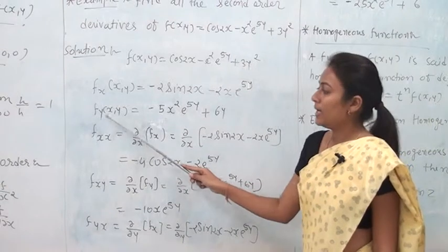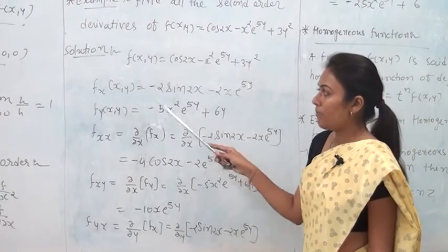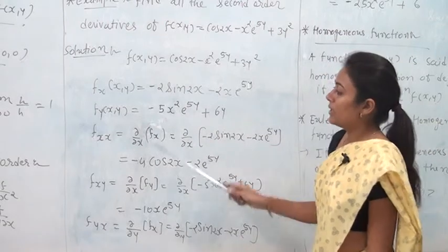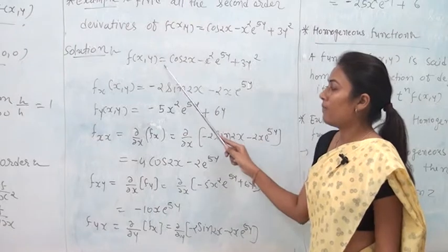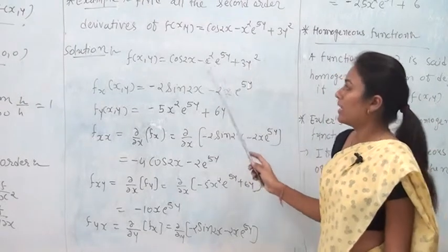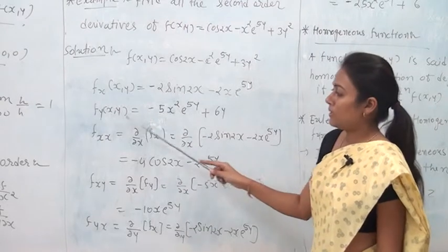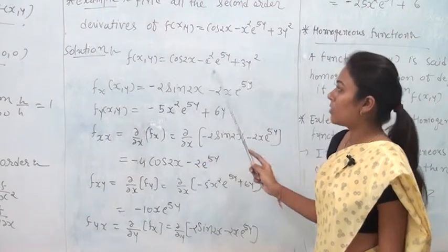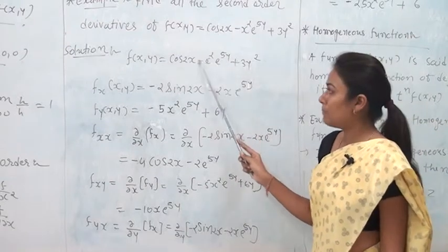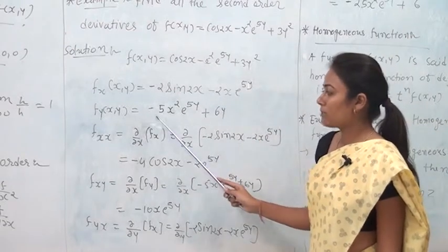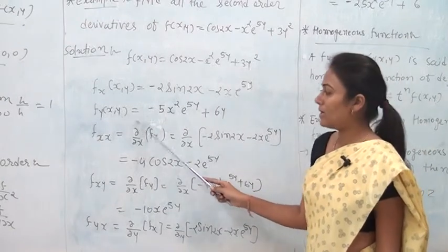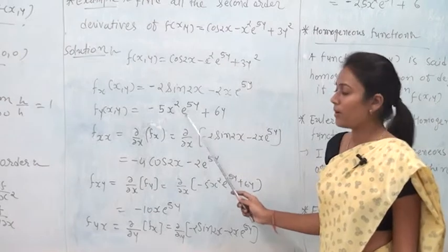Now finding f_y: differentiating with respect to y (x is constant). cos 2x is a function of x only, so it becomes 0. For −x²e^(5y), x² is constant, derivative of e^(5y) is 5e^(5y), giving −5x²e^(5y). Derivative of 3y² is 6y. Therefore f_y(x, y) = −5x²e^(5y) + 6y.